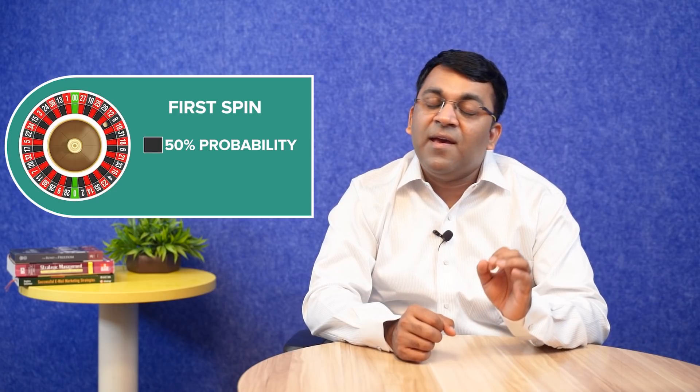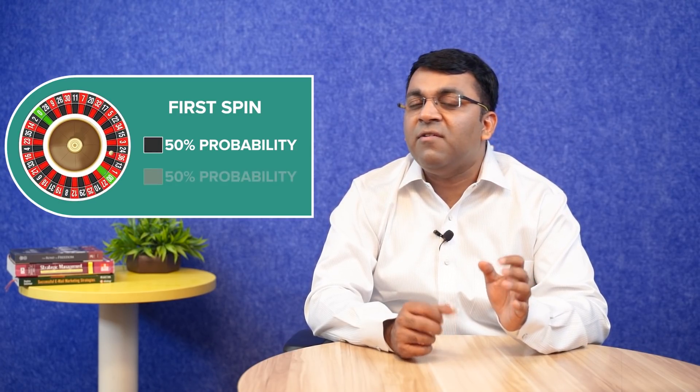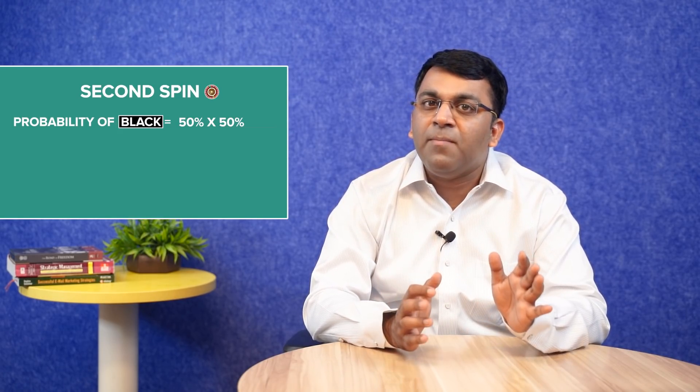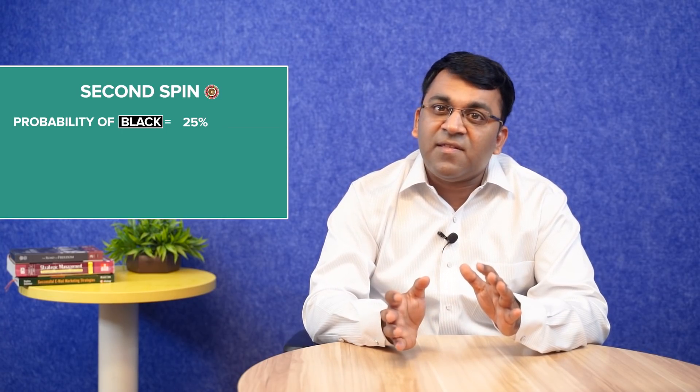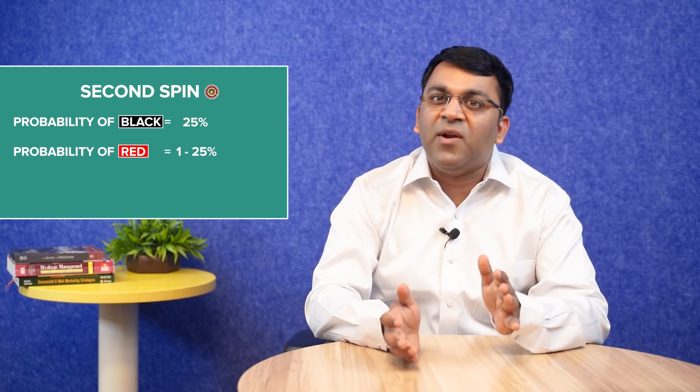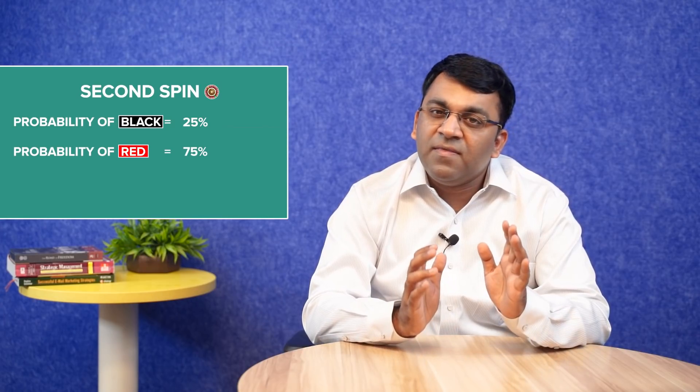Let's deduce what might have happened using probabilities. On the first spin there is a 50% probability of black and 50% of red. The misapprehension really starts at the second spin — most people think that since the first spin resulted in black, the probability of the second spin also being black is 50% × 50% = 25%. This means they calculate the probability of the second spin being red as 1 minus 25%, which is 75%.